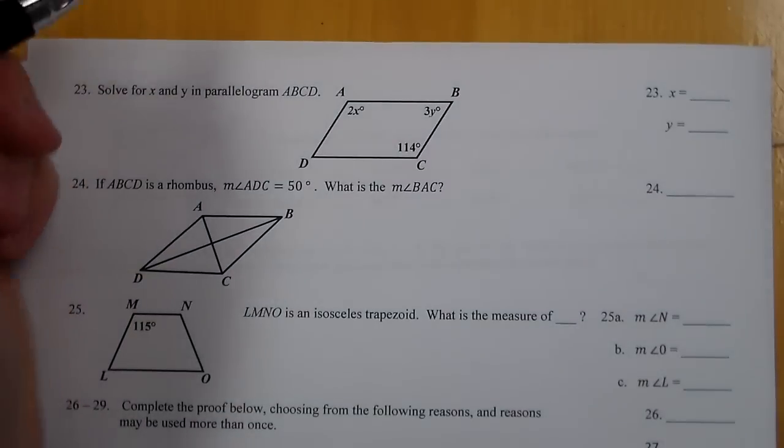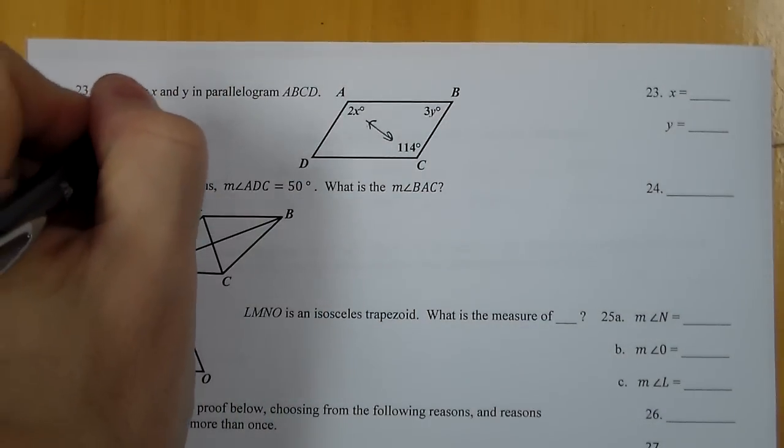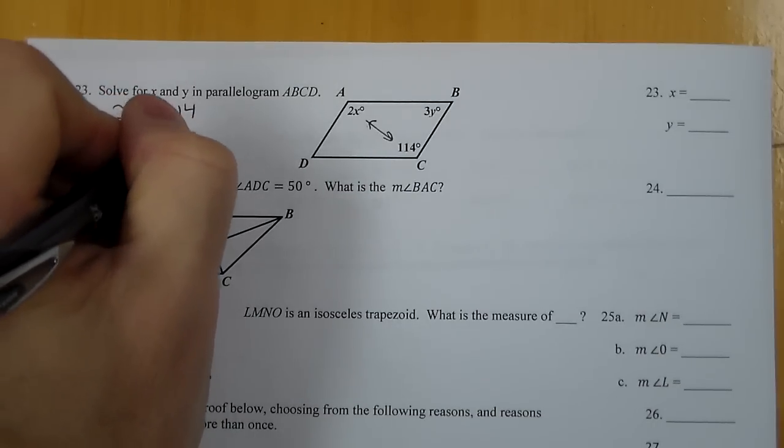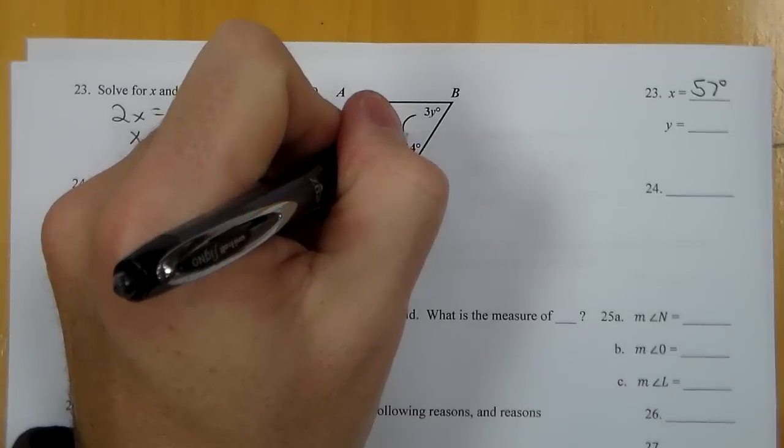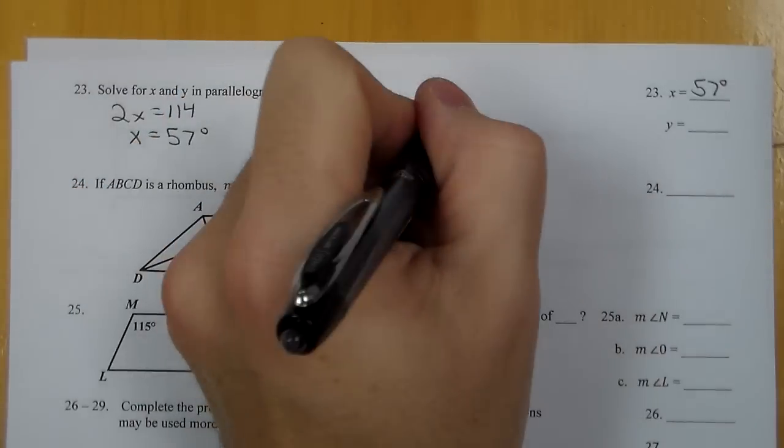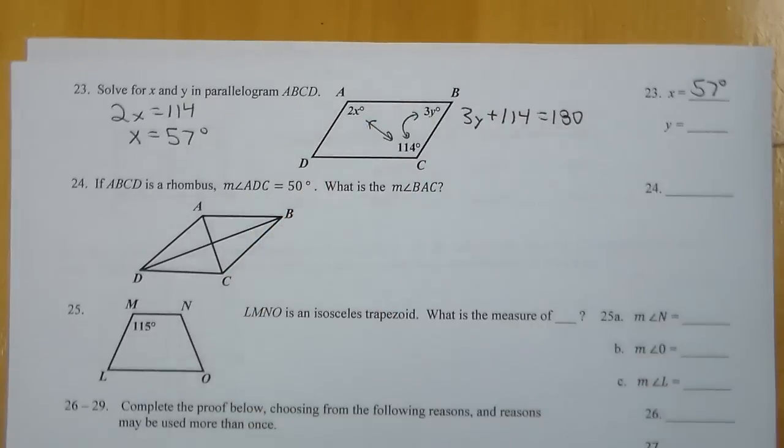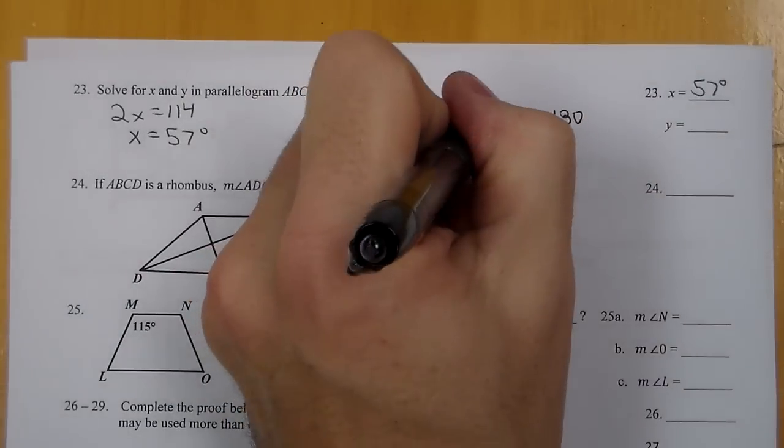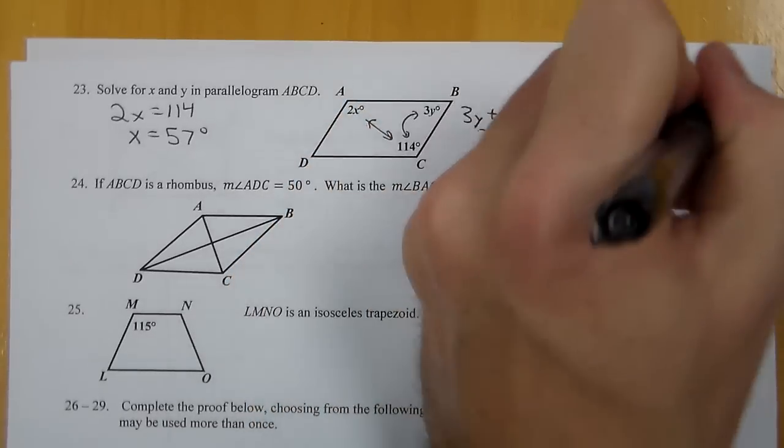Now we are on 23. On 23, I know that these two angles are congruent, so I'm going to go 2x equals 114. Divide by 2 and I get 57 for x. I know that these two angles, 3y and 114, have to add to 180 because they are supplementary. So I first subtract 114 from 180, so we get 3y equals 66. Divide by 3 and we get 22.